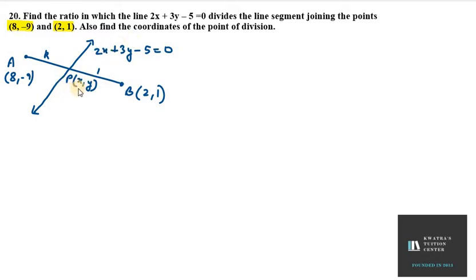So we need to find these two things: x and y and k. So first of all, what do we do? We will take the section formula. Section formula apply from A and B. So first of all, take the x value.